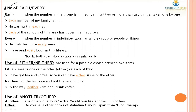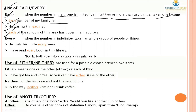Use of 'each' and 'every'. 'Each' is used when the number in the group is limited and definite — two or more things taken one by one. For example: 'Each member of my family fell ill.' 'He was hurt in each leg.' 'Each of the schools of this area has government approval' — here we know the particular number of schools in the area.